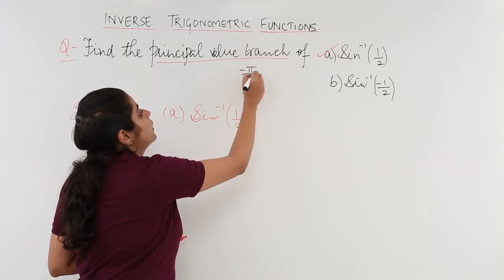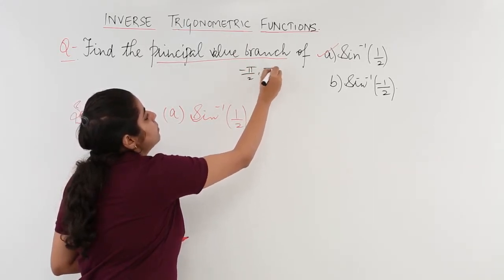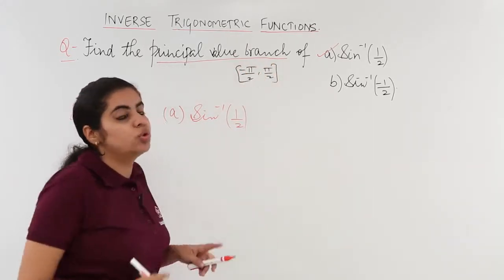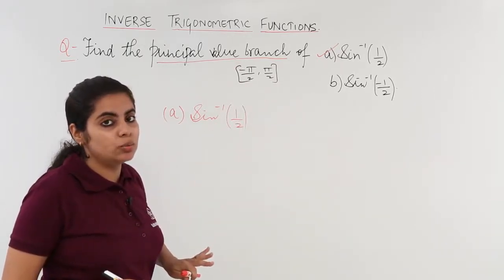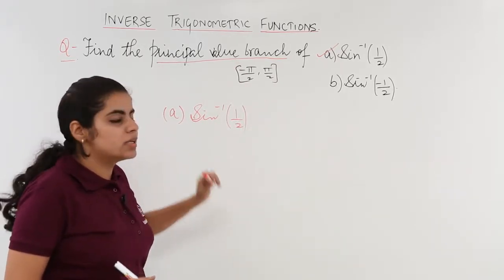I should know it already from the table. It is minus pi by 2 to pi by 2. So, no compromise. The value has to lie in this value, right? So, sine inverse 1 by 2...